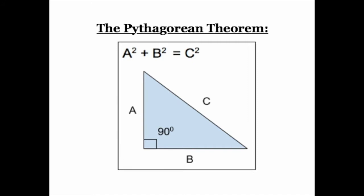How do you know when you have a right triangle? If you look at this triangle right here and you look at this little thing in the corner that kind of looks like a box, that's a dead giveaway that you have a right triangle. We have three sides on the triangle. This side here we can call side A, this side down here we can call side B, and they come together right here to make this 90-degree angle, which is what this little box-type thing in the corner represents.